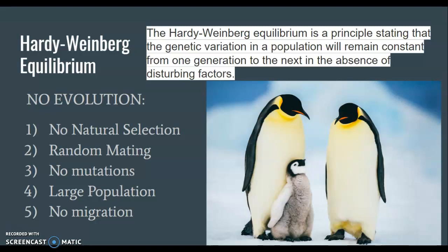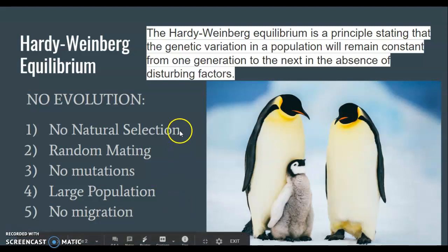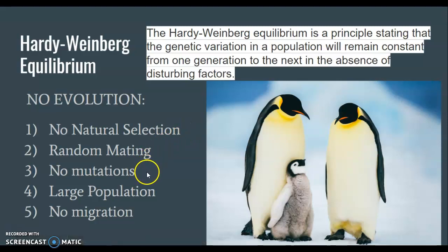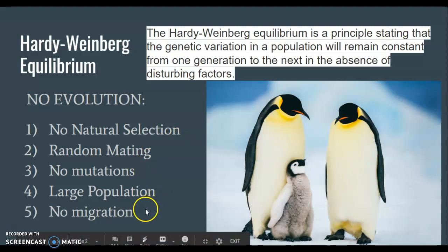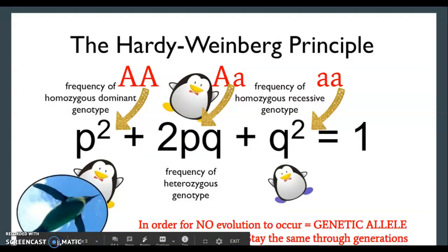However, that's extremely hard to do. The five principles we're going to be talking about today are: no natural selection, random mating, no mutations, large population, and no migration. In order for no evolution to happen, you must hit all five of these factors.